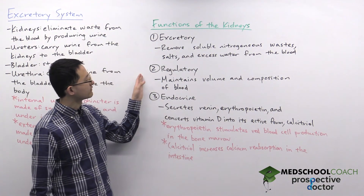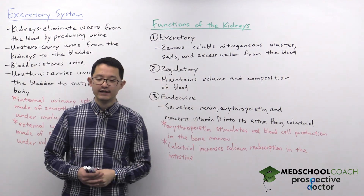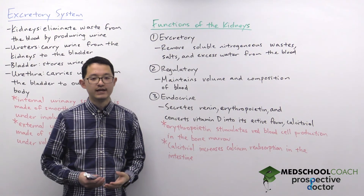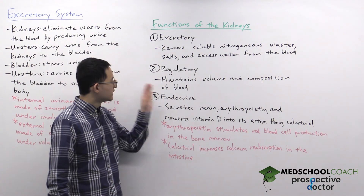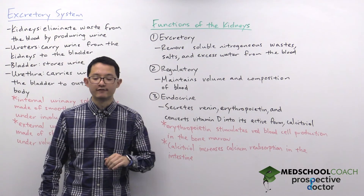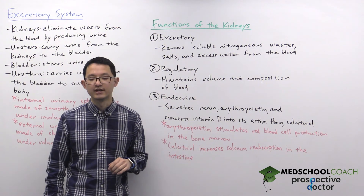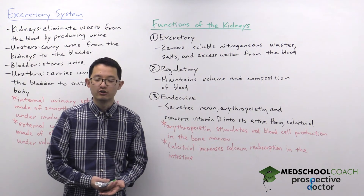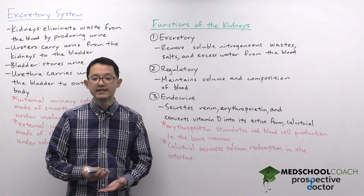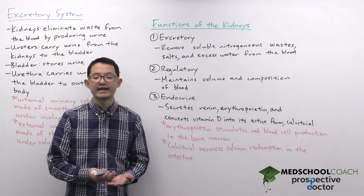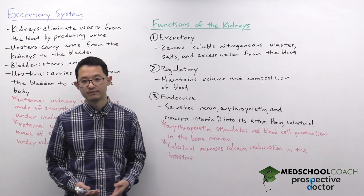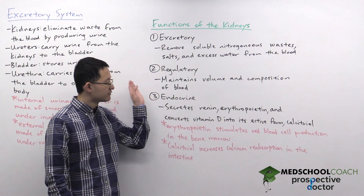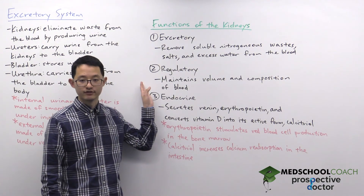A second important function of the kidney is regulatory. As part of urine production and excretion of waste, salts, and water, the kidneys help regulate the volume and composition of blood. If blood volume is too low, the kidney will decrease urine output to help maintain blood volume. Conversely, if someone drinks a lot of water, blood volume increases and the kidney responds by increasing urine volume.